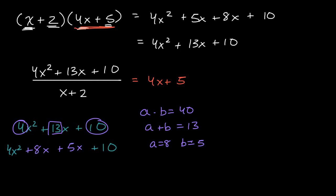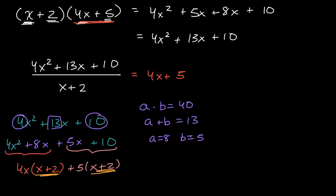For the first two terms, I could factor out 4x, so it becomes 4x(x+2). For the second two terms, I could factor out 5, so plus 5(x+2). Then I can factor out (x+2), so it becomes (x+2) times (4x+5), which is exactly what we had earlier.